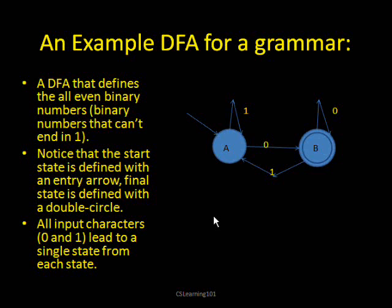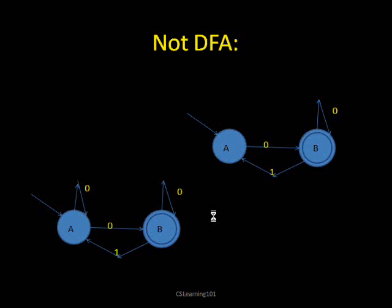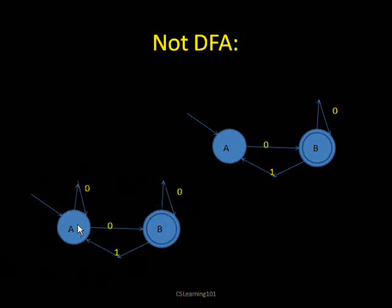Here are some examples of machines that are not DFAs. The first one — if you look at state A, input one does not go anywhere for state A, therefore it can't be a DFA. The second machine has, again from state A, the input for zero can either go to state A itself or to state B. That's wrong, you can't do that — therefore that's not a DFA either.